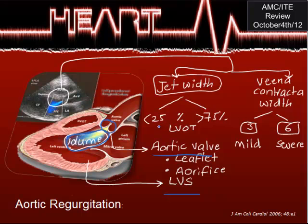The jet width is measured as a percentage of left ventricular outflow. If the volume is less than 25% of left ventricular output, that is mild aortic regurg. If it is more than 75%, that is severe aortic regurg. This is what we call jet width on echo Doppler.